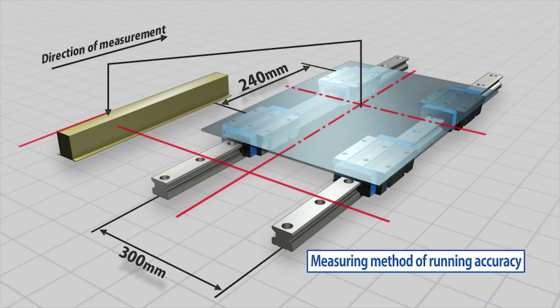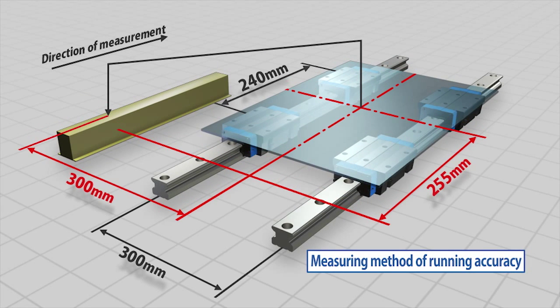This illustration shows the method of measuring traveling parallelism. This method of measurement envisages the layout when the product is integrated into a machine.